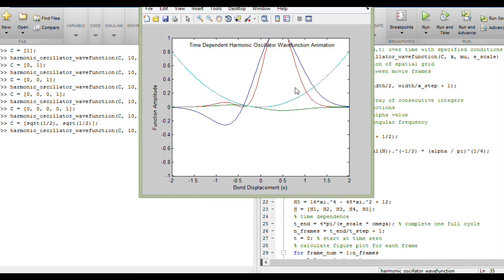And so if we calculate an expectation value of momentum here, we would get some non-zero value because the particle is moving. Its density is moving back and forth to the right. And you can kind of see the real and imaginary parts pushing each other back and forth throughout the wave function's trajectory in time.